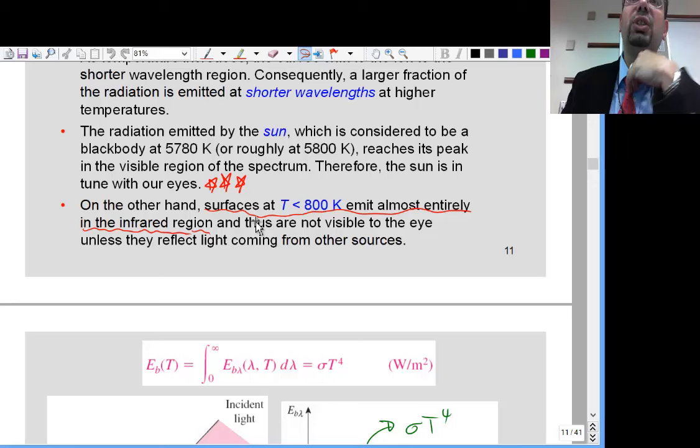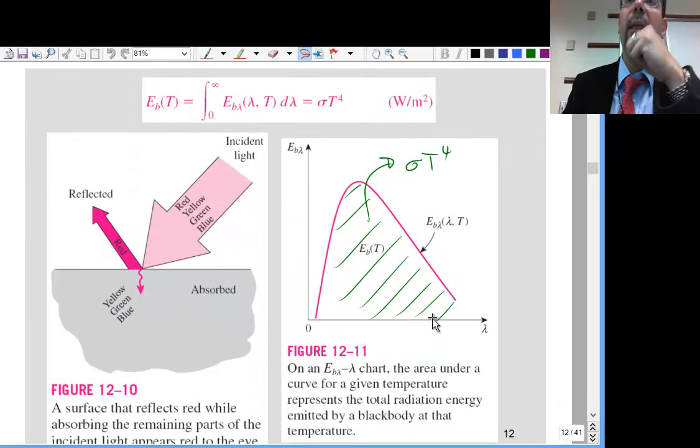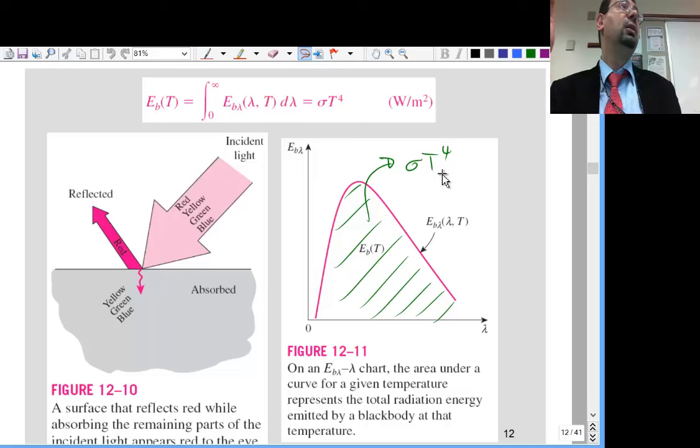Alright, so surfaces less than 800 Kelvin, that's us, mainly emit in the infrared radiation. And under that curve, when you collect all those guys, that's the sigma T to the power 4. So the sigma T to the power 4, that's the whole deal, but it's divided over different wavelengths.